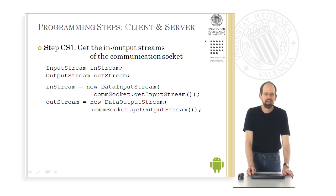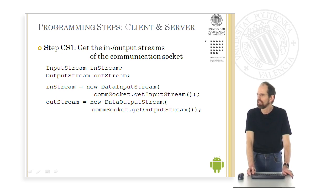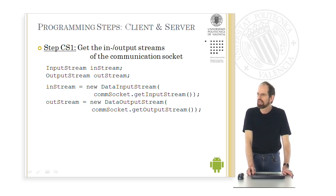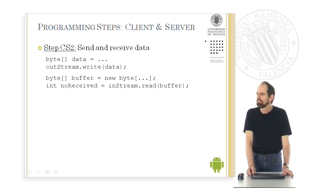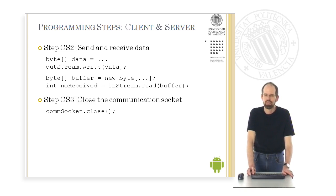The next steps are the same on both the client and server sides. Both get the input and output streams of their respective sockets by calling getInputStream and getOutputStream. These calls yield standard objects of the Java IO package — objects of type InputStream and OutputStream. Afterwards, normal read and write operations can be executed on these streams. For example, calling outStream.write sends a byte array of data, and calling inStream.read reads a buffer of bytes. Finally, after communication has ended, both sides close their sockets.